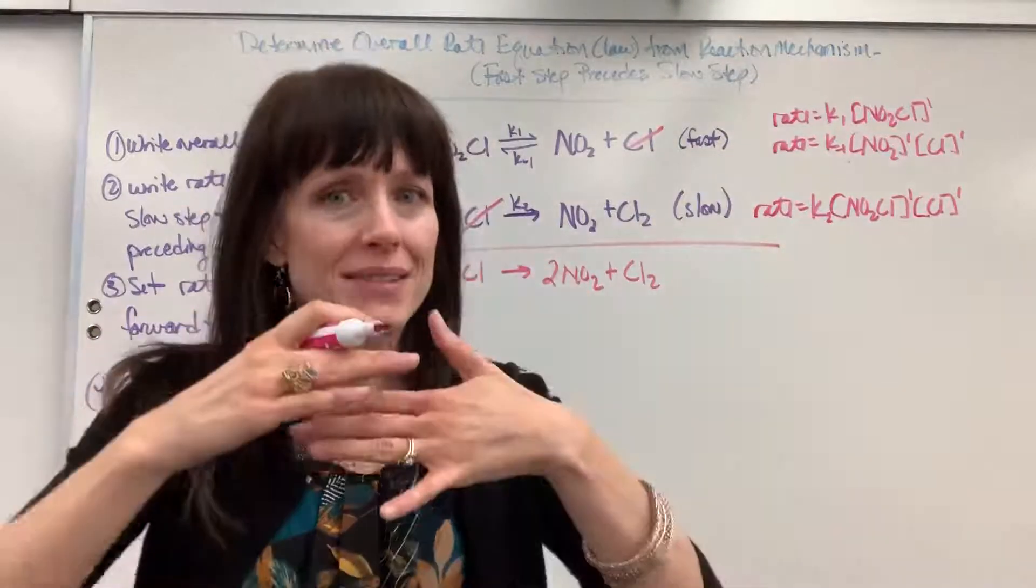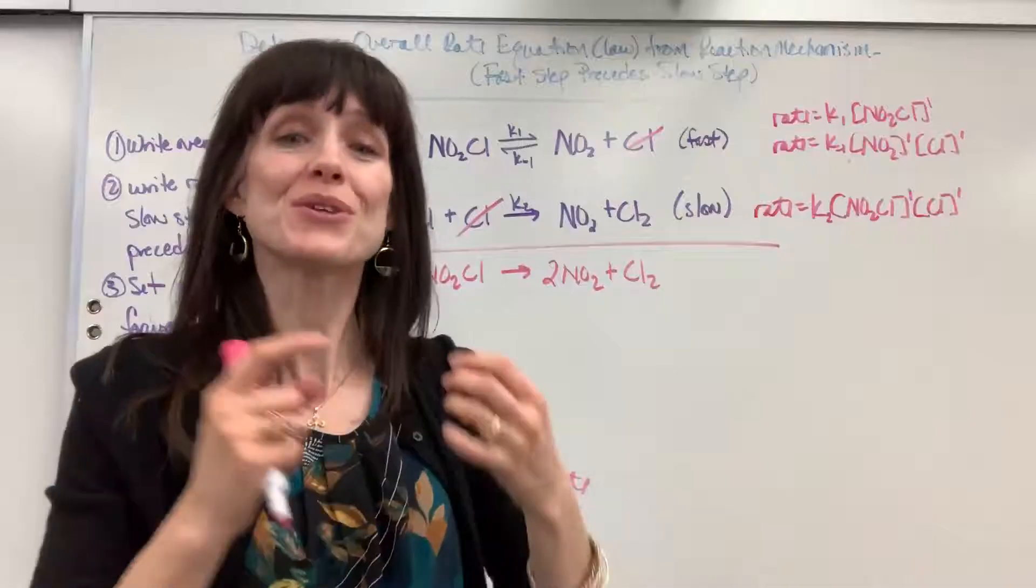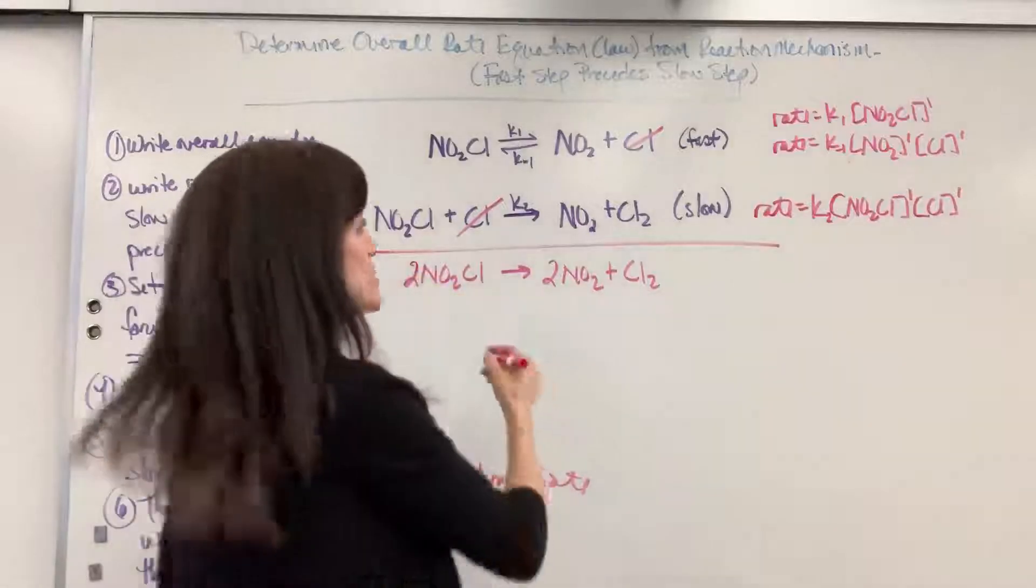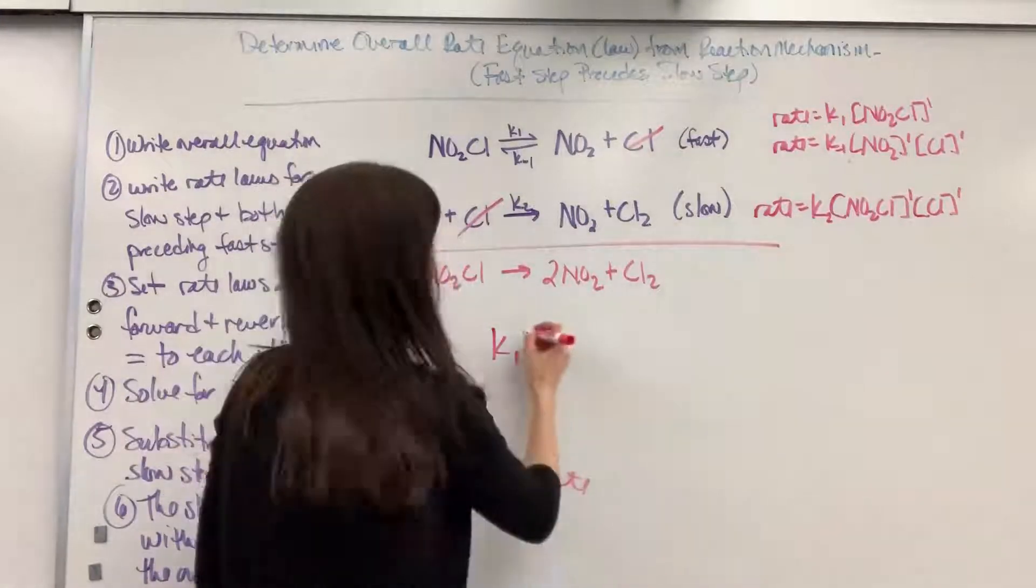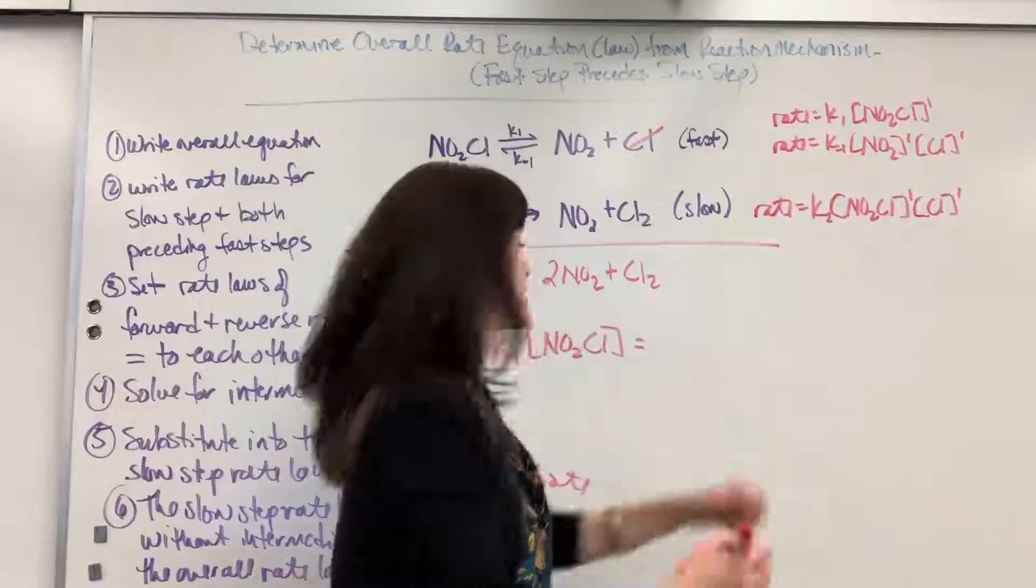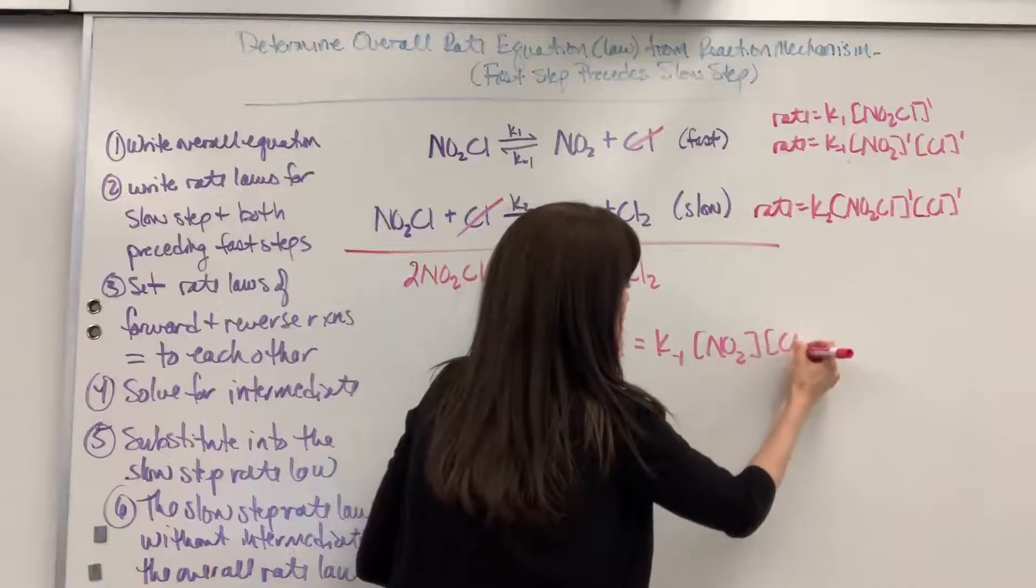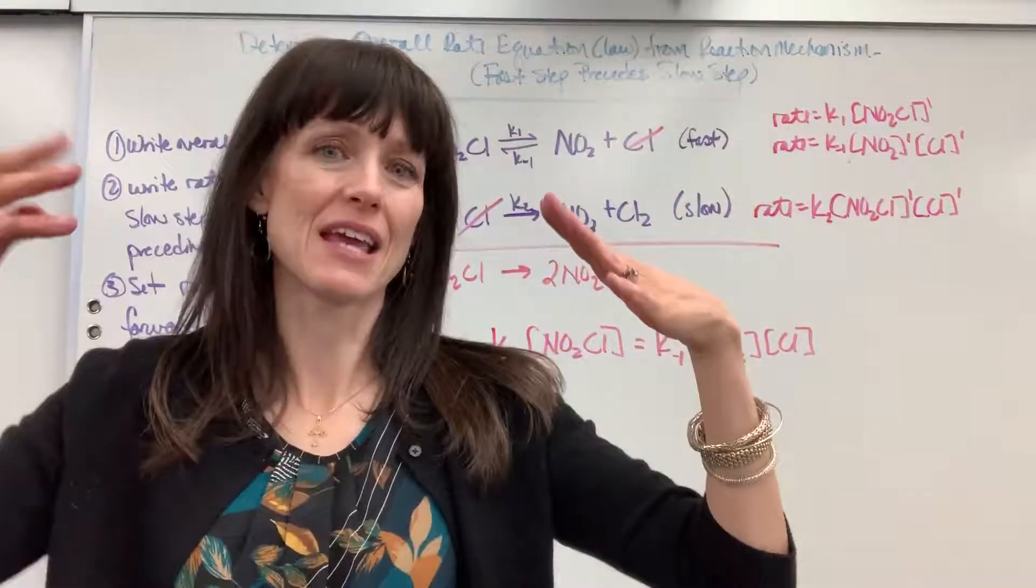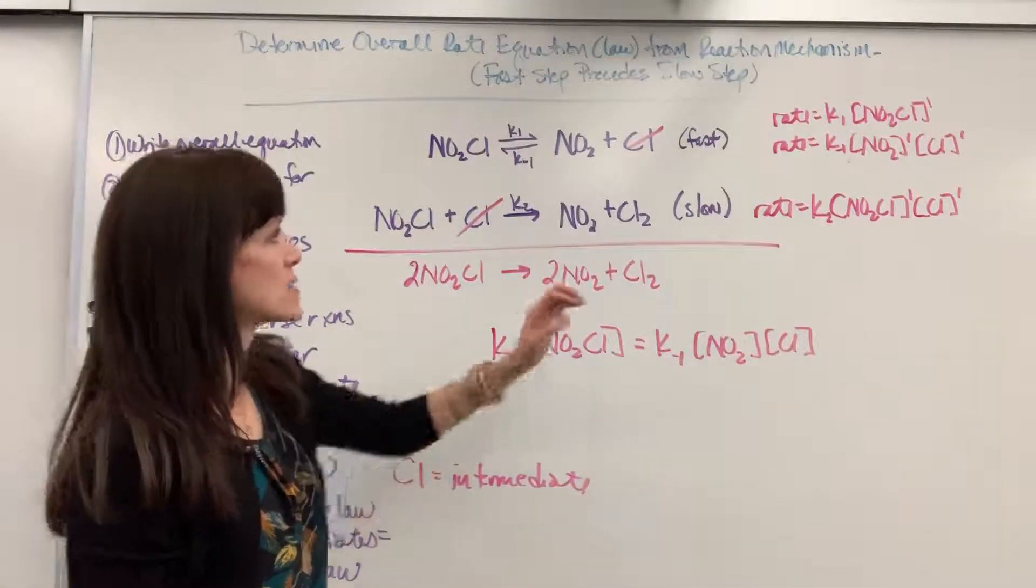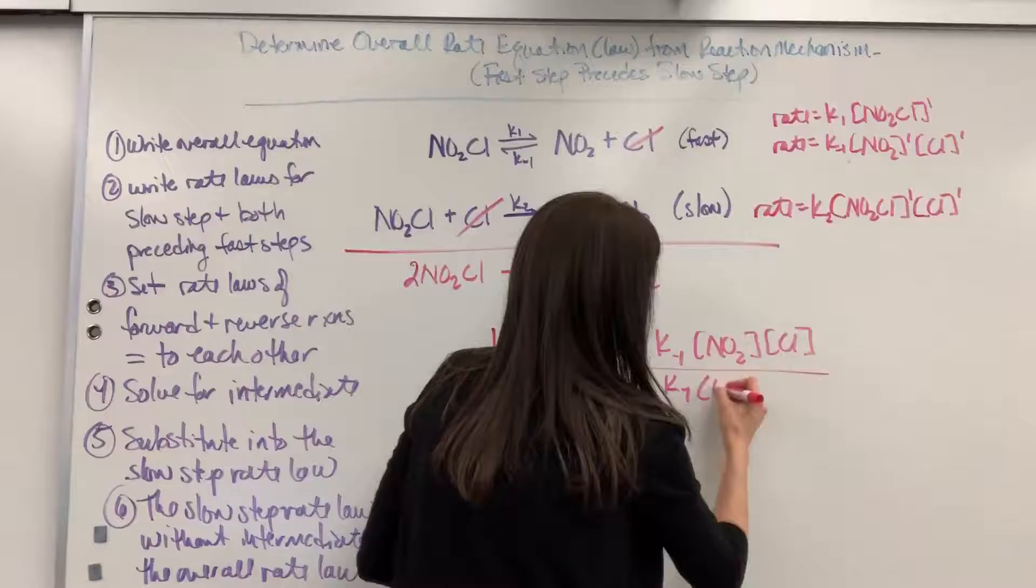Cool part. Remember, it's at equilibrium. Those rates, the forward and reverse rate, are the same. So that means I can set these equal to each other. We're going to have K1 times NO2Cl. That is going to equal the reverse, K minus 1 NO2Cl. Because they have the same forward and reverse rates, we set them equal to each other.